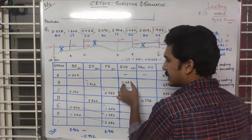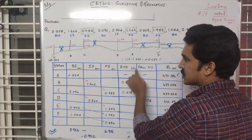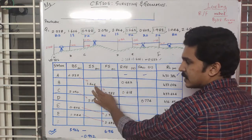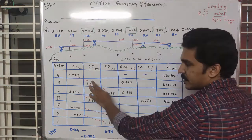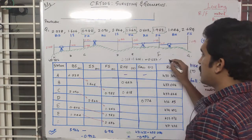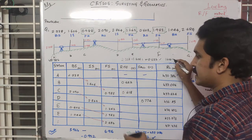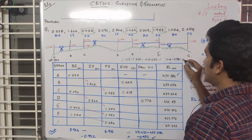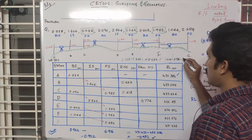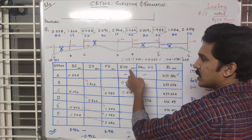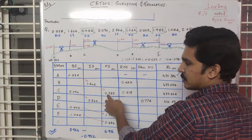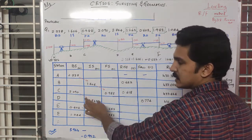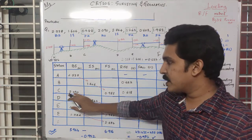So 2.228 minus the next reading gives 0.622, which is a positive value equal to rise. Similarly, 1.606 minus 0.9 gives 0.68, and that positive value is also a rise.